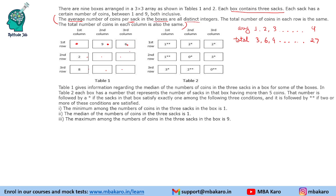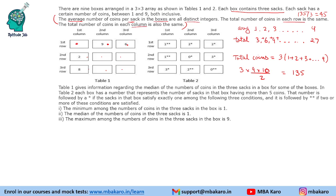The total of all coins will be 3 times (1+2+3+...+9). Using the sum of first n natural numbers formula n(n+1)/2, the total is 135. We are given that each row total is the same, so 135 divided by 3 is 45. Each column will also sum to 45. The crux was: if one used and understood these two statements, it was not as difficult as it seemed.